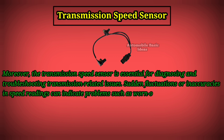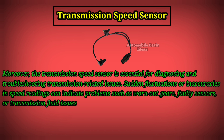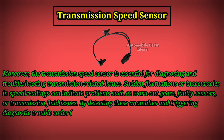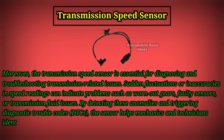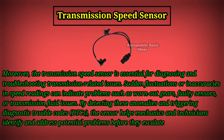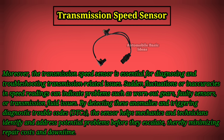Sudden fluctuations or inaccuracies in speed readings can indicate problems such as worn-out gears, faulty sensors, or transmission fluid issues. By detecting these anomalies and triggering diagnostic trouble codes (DTCs), the sensor helps mechanics and technicians identify and address potential problems before they escalate, minimizing repair costs and downtime.